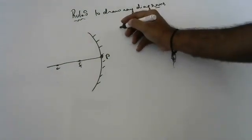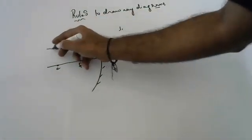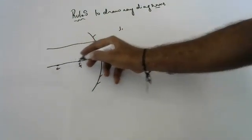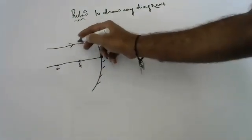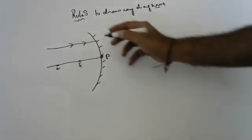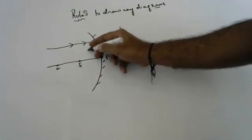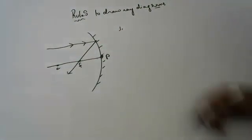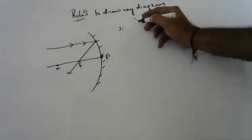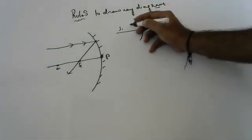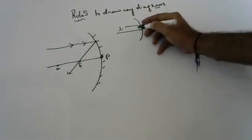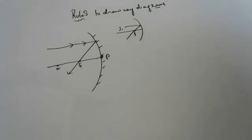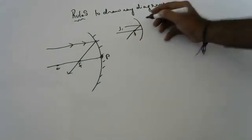First rule. Any light ray coming parallel to the principal axis — after reflection, it compulsory goes to focus. Focus is the point where all light rays meet. So any light ray coming parallel to the principal axis will compulsory pass through focus.